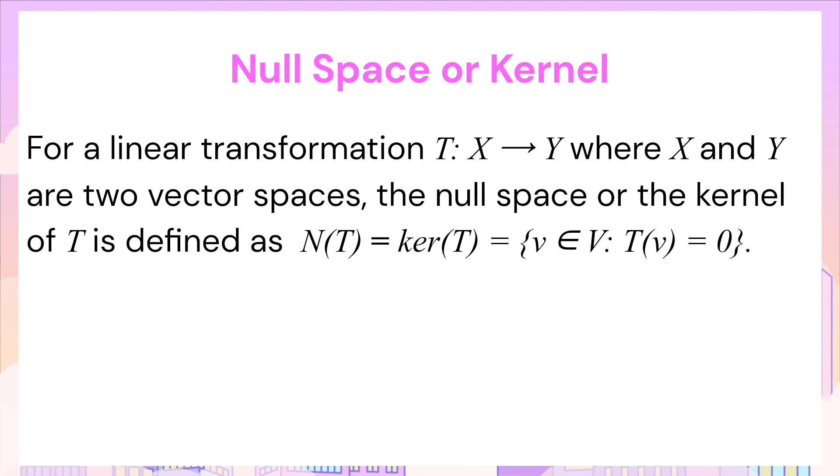Firstly, let's take a brief look at the null space and the concept of an injective map. For a linear transformation T from X to Y, where X and Y are two vector spaces over the same field, the null space or kernel of T is defined as the subset of X consisting of those vectors that T maps to zero.